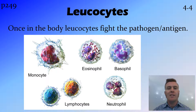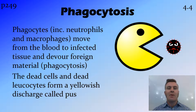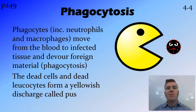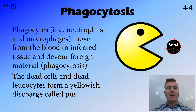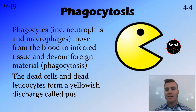Once the pathogen or antigen gets through the first line of defense — those physical barriers — and into the body, the leukocytes turn on to start fighting it. The first thing that happens is the phagocytes, mainly neutrophils and macrophages, move from the blood to wherever the infection is and devour the foreign particle. This devouring cell action is called phagocytosis, which is where the phagocytes get their name. These dead cells — the dead bacteria or antigen that was eaten, plus the phagocyte when it dies — form a yellowish discharge called pus.